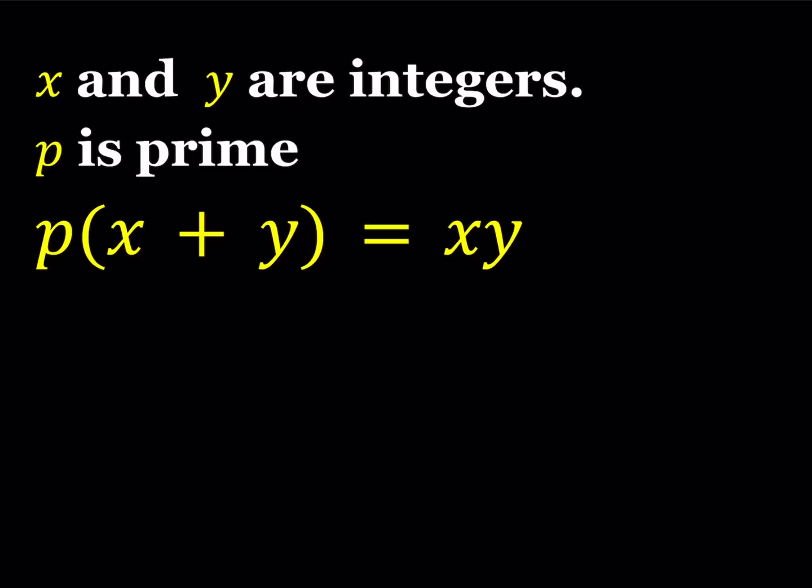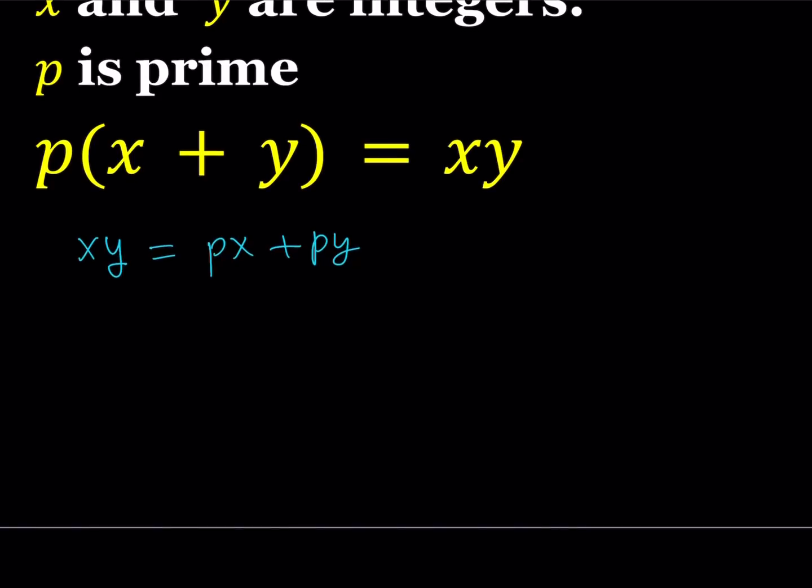And P is a prime number, it's basically any prime number, including two. So let's go ahead and expand the left hand side, and we're going to be getting the following. Now I want to use Simon here, just like I used in another video, because Simon is very helpful in these situations. Let's go ahead and subtract everything from XY, and this is going to equal zero.